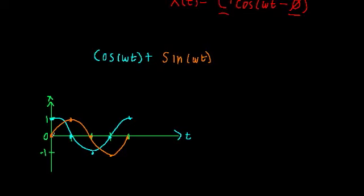Let's start here: sine is zero, cosine is one, so the sum is one. At the point where cosine and sine intersect, they have the same value, so adding them together gives double the value — a point up here. Then sine is one and cosine is zero, so the sum is one. At the next easy point, sine is zero and cosine is negative one, so the sum is negative one. At the next intersection, the result is doubled. Then sine is zero and cosine is negative one, so the result is negative one. And then sine is zero and cosine is one, so the result is one.